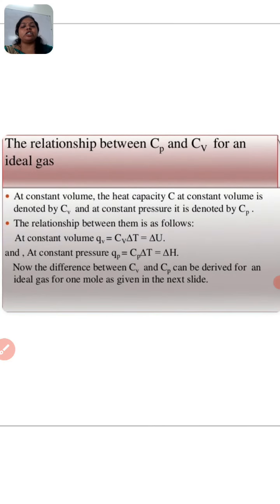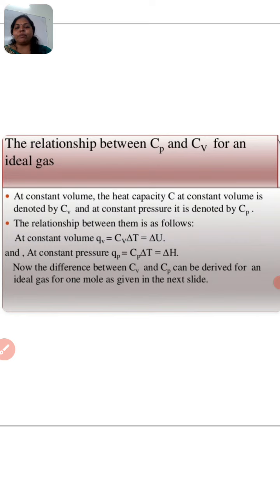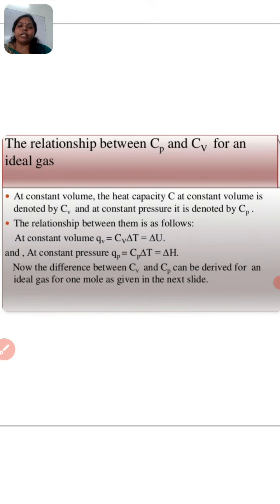Now the next topic is the relation between CP and CV. At constant volume, the heat capacity is denoted by CV, and at constant pressure it is denoted by CP. At constant volume, QV is equal to CV·ΔT, which equals ΔU. And at constant pressure, QP is equal to CP·ΔT, which equals ΔH.